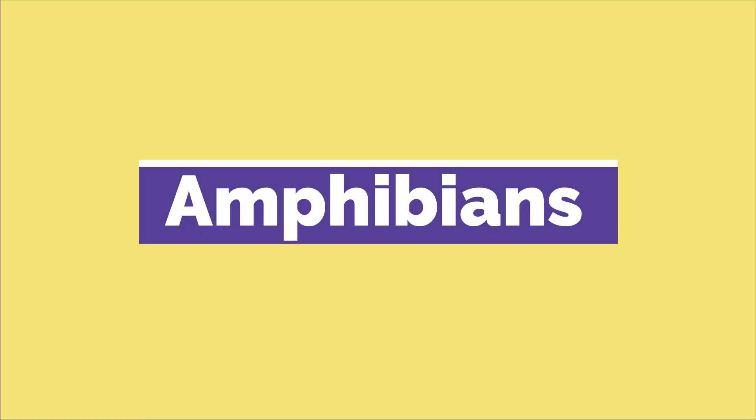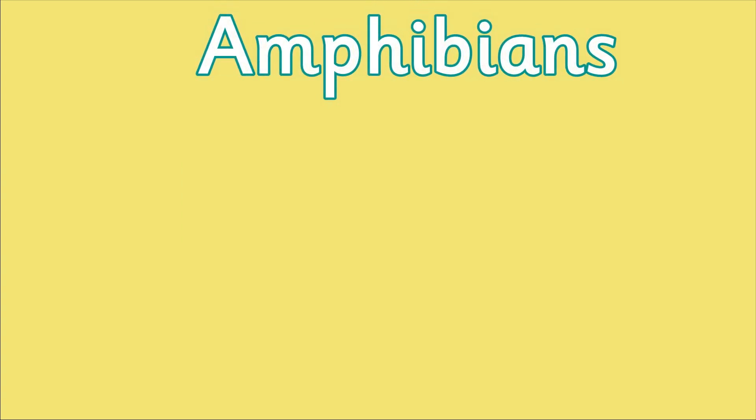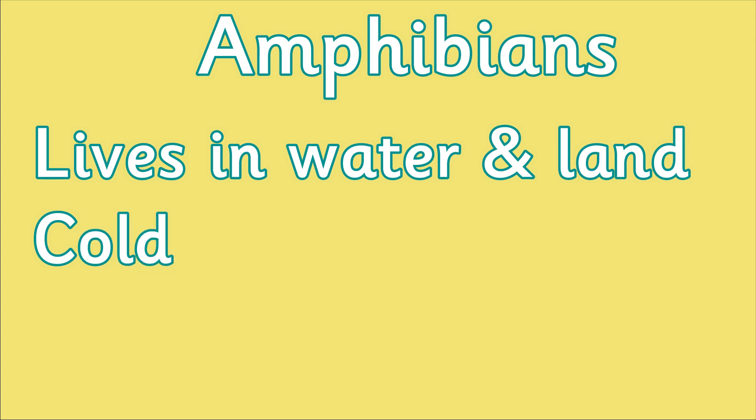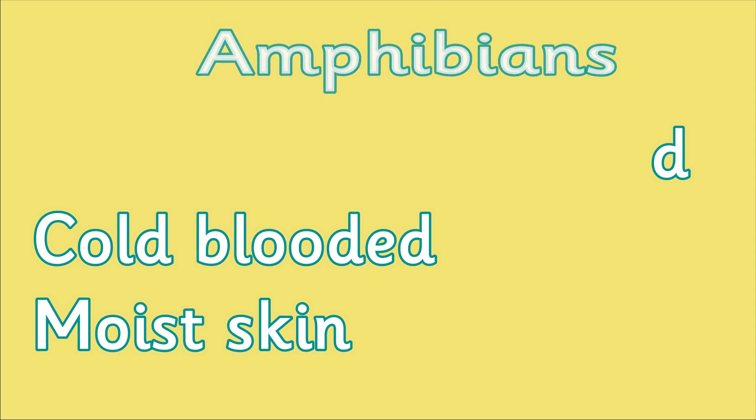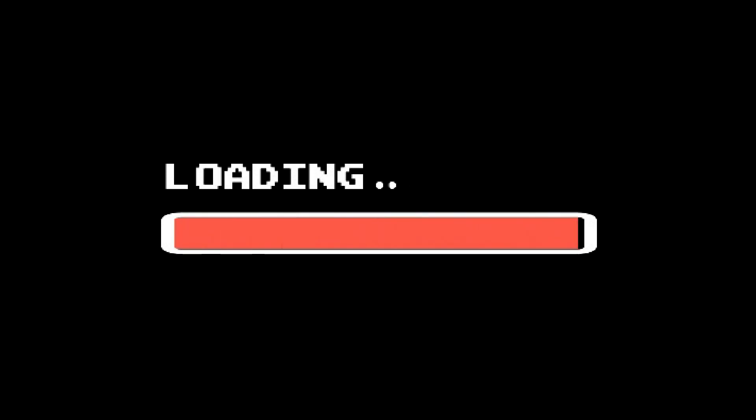And finally, let's talk about amphibians. An amphibian is an animal that lives in both the water and on the land. They are cold-blooded and have moist skin. They do not have hair or fur. These animals are amphibians.